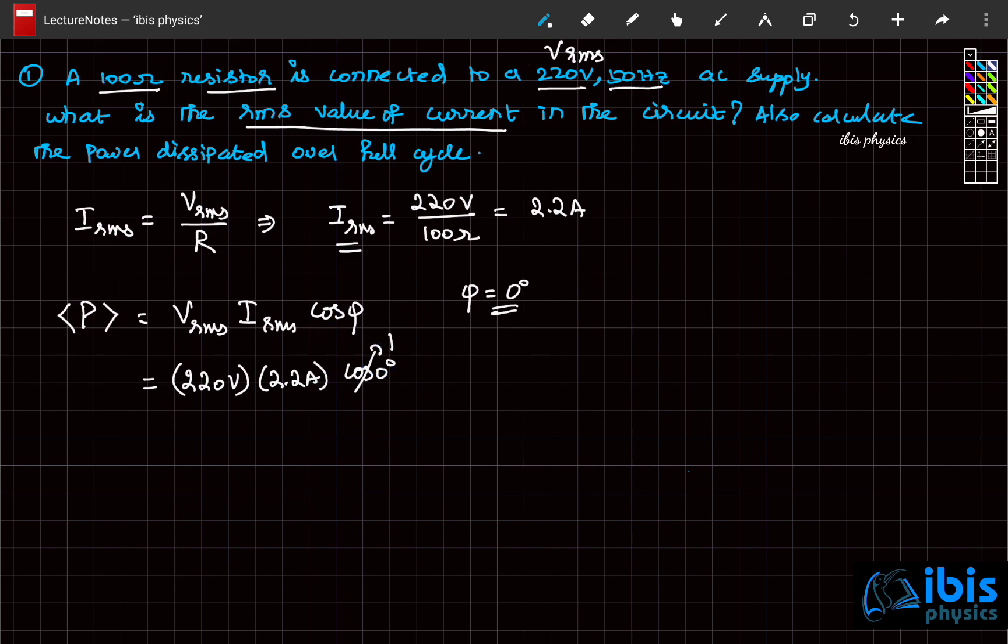Since it is power, its unit is in watts. So the total power dissipated over a full cycle is 484 watts.